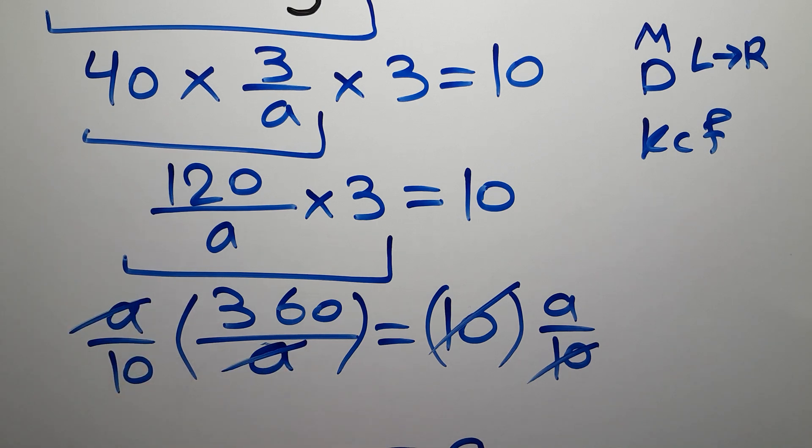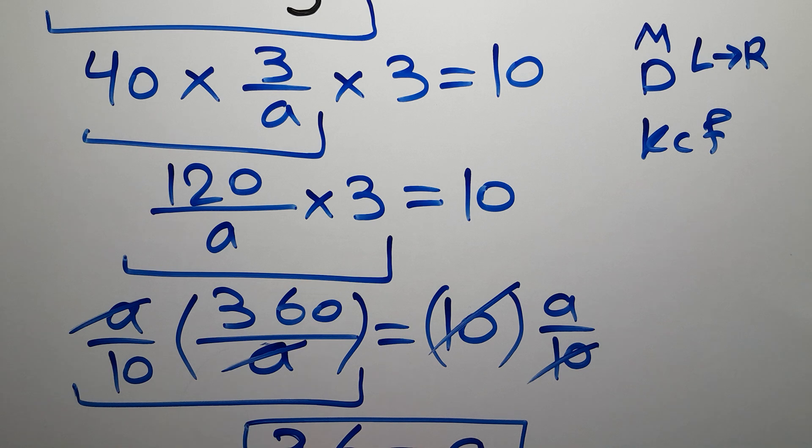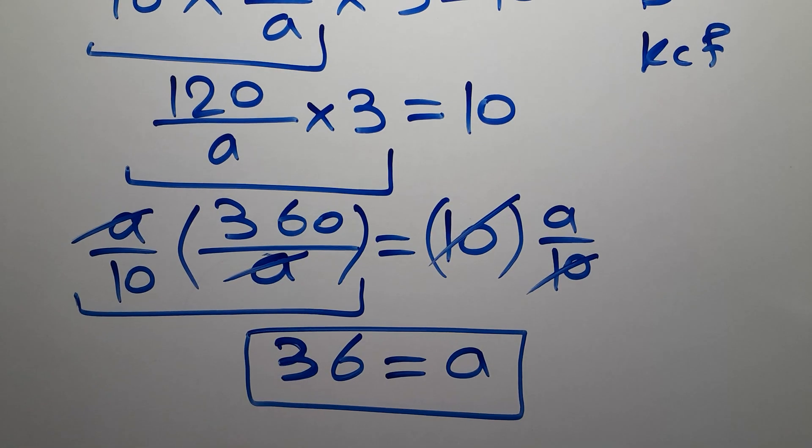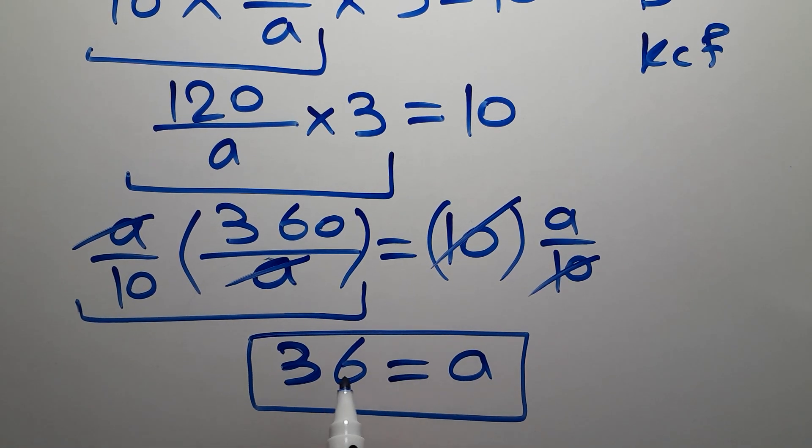360 over 10—360 divided by 10 gives us 36. This is our final value for a. a equals 36.